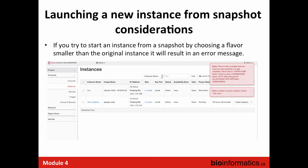Another important point: when you start the VM you're going to snapshot, start with the smallest flavor that allows you to install your application. If you start with a larger flavor like c1.medium and take a snapshot, then try to launch an instance from that snapshot using a smaller flavor like c1.micro, it won't fit and you'll get an error saying the flavor disk is too small. Always start with the smallest image size or flavor that provides the space needed to customize your application and make your changes.